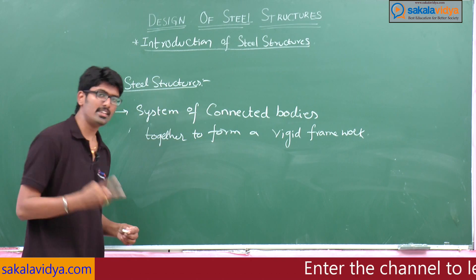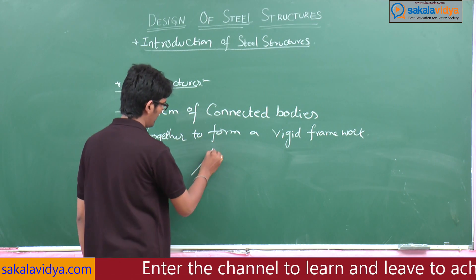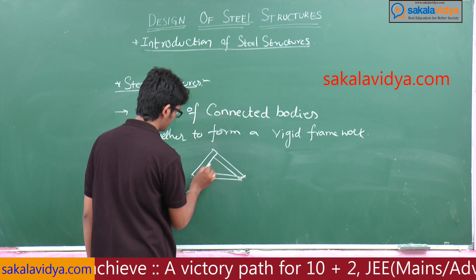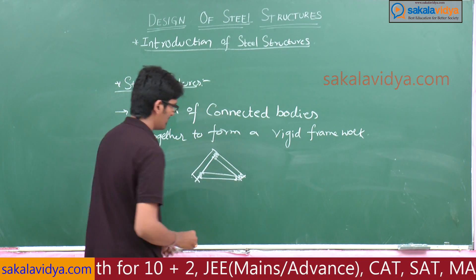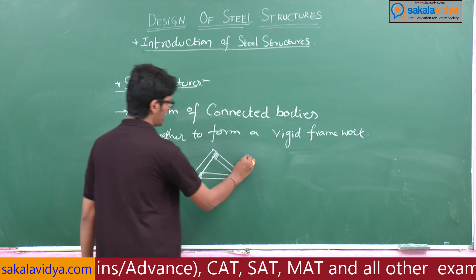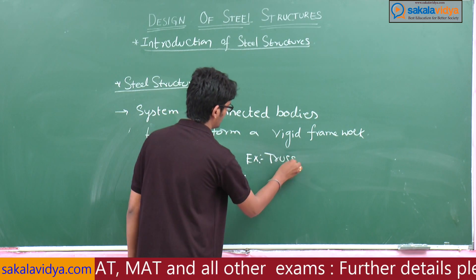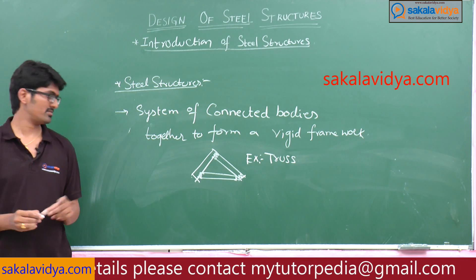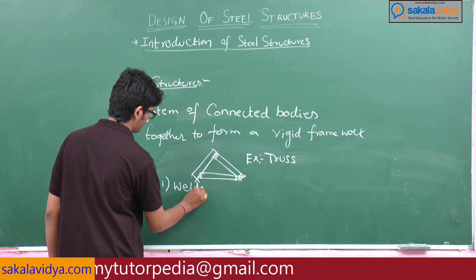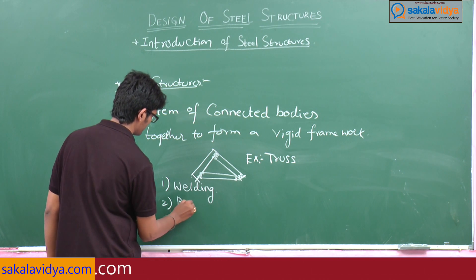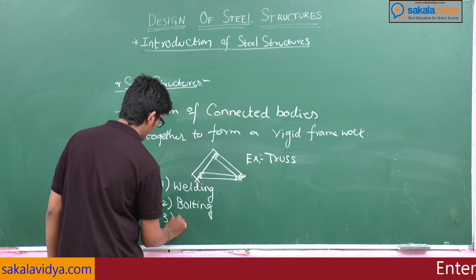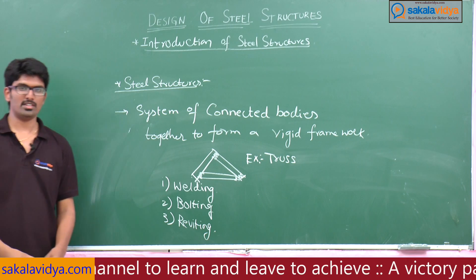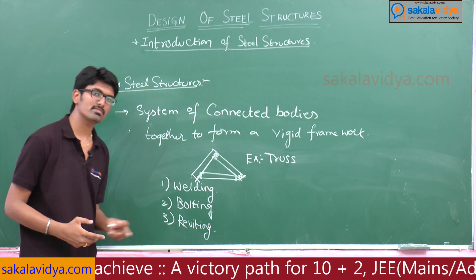For example, let us consider three steel members connected by the process of welding — this member, this member, and this member are connected by welding. This simply forms a truss. A truss is an example of steel structures. The different processes for connection of steel structures are: first, welding; second, bolting; and third, riveting.